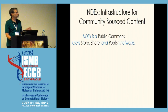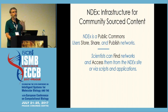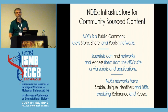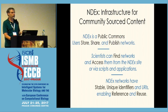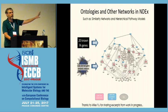Users can store, share, and publish their networks. Findability is key — scientists can find their networks through a full API and search interface. Networks have stable unique identifiers for reference and reuse, so we are extremely FAIR-data oriented.